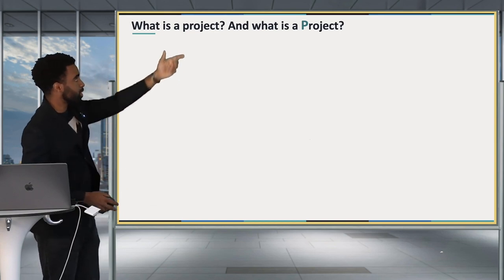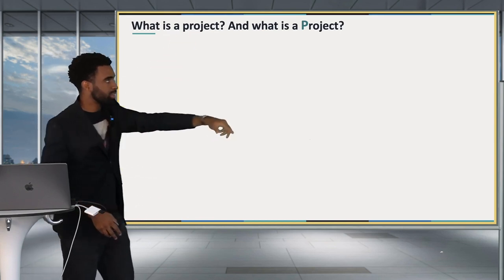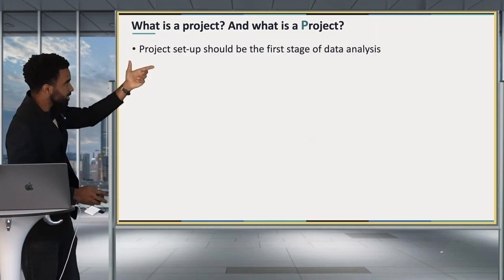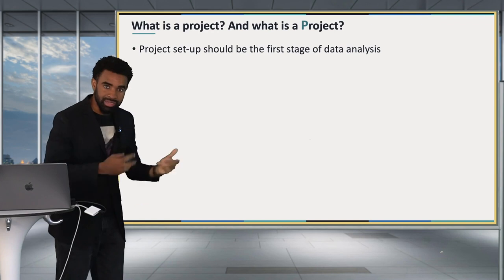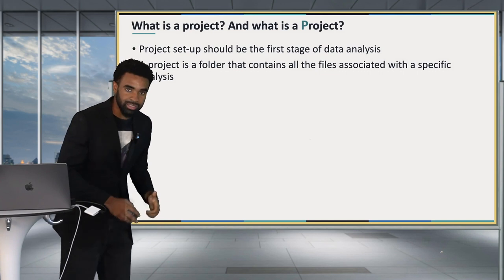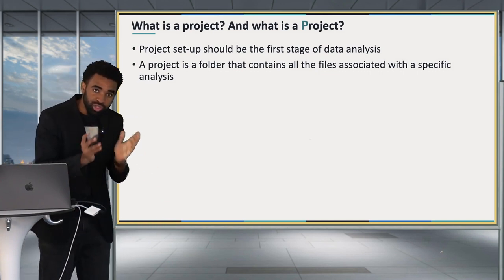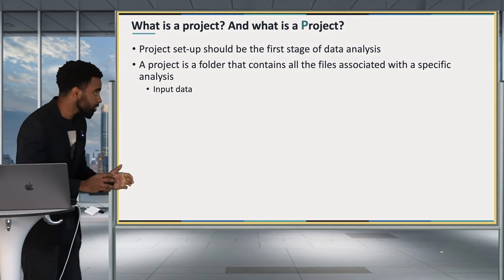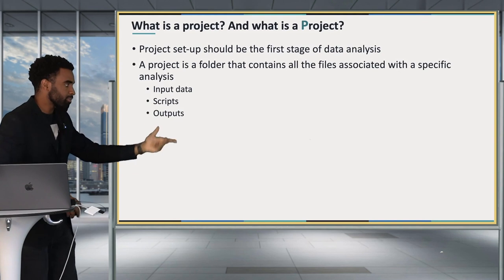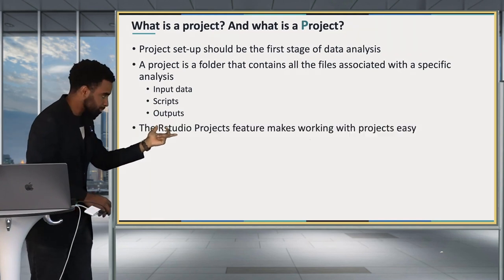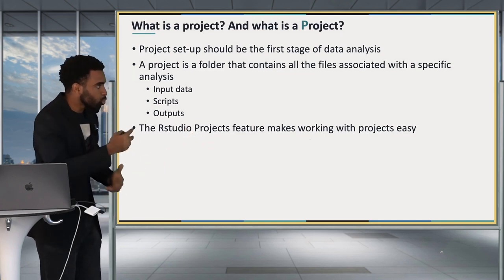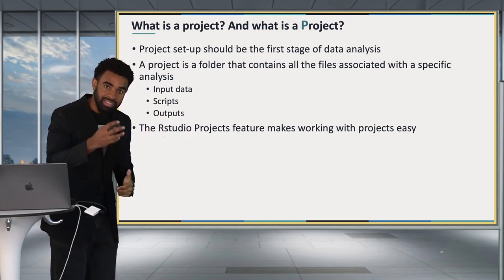Let's talk about what a project is — small p — and what an RStudio Project is — capital P. Project setup really should be the first stage of your data analysis. A project is basically a folder that contains all the files associated with your specific piece of analysis. This folder usually contains subfolders: typically an input data folder, a scripts folder, and a folder for your outputs. The RStudio Projects functionality makes working with these project folders significantly easier.